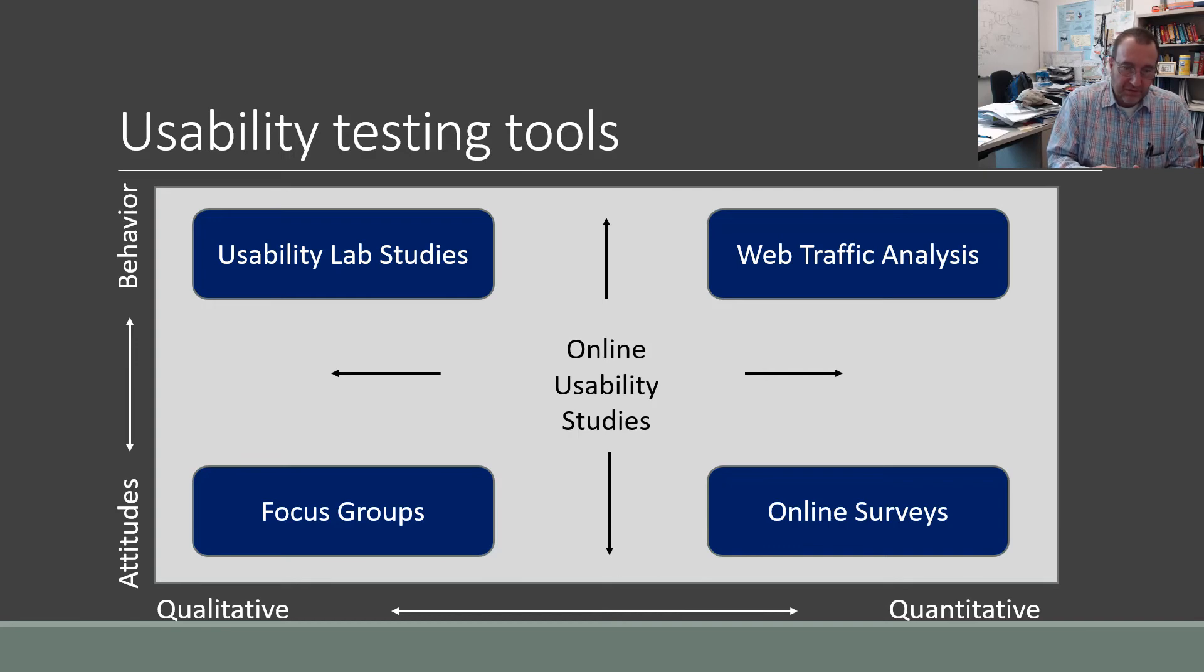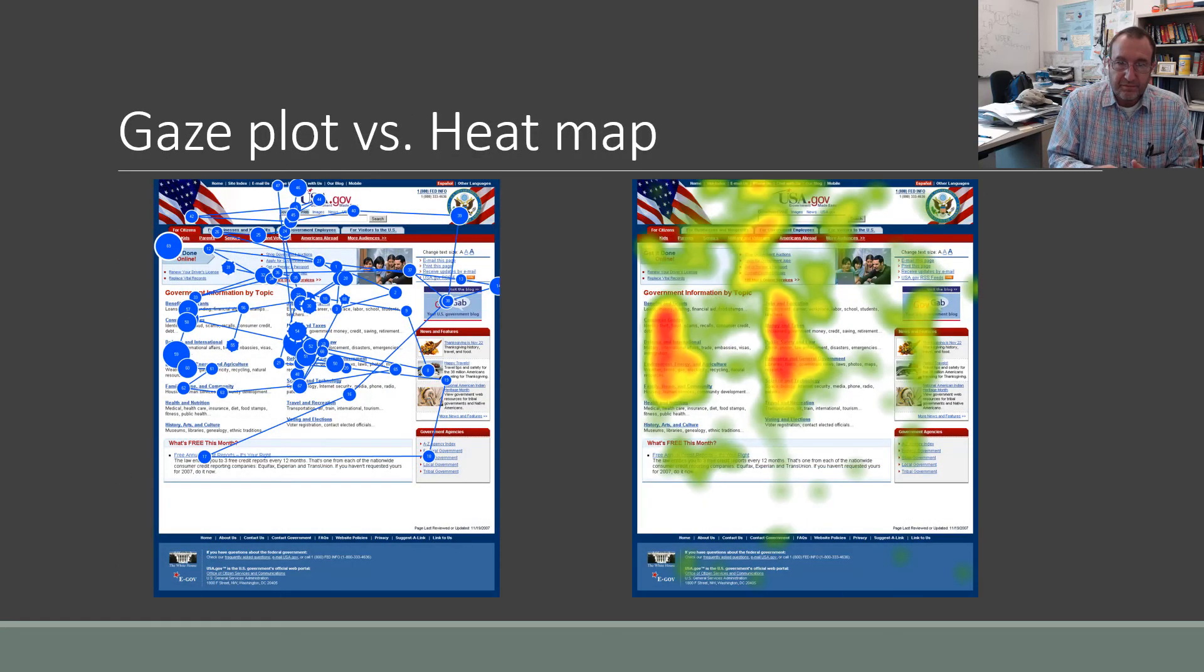Down at the bottom you have focus groups which are mostly attitude and qualitative. For our review these are gaze plots and heat maps. The bigger dots show where people looked at or contacted the page with more often. So if you're going to be successful you want to make sure you put your most used information in those spots.